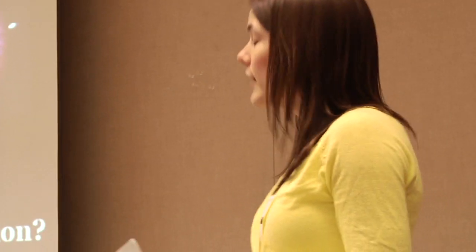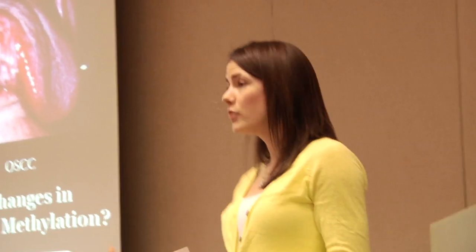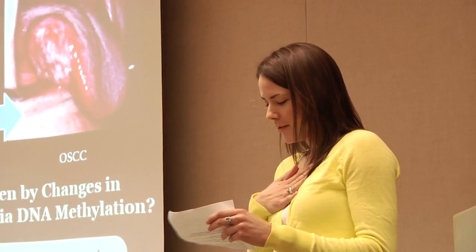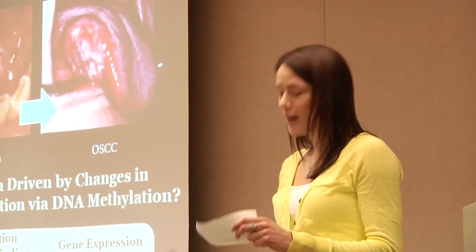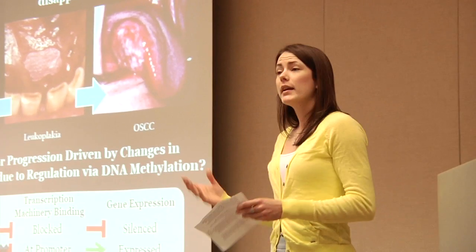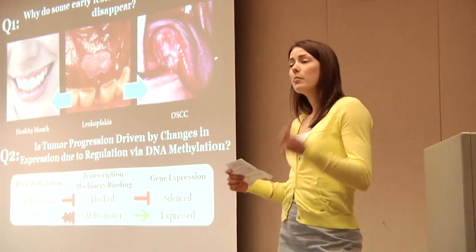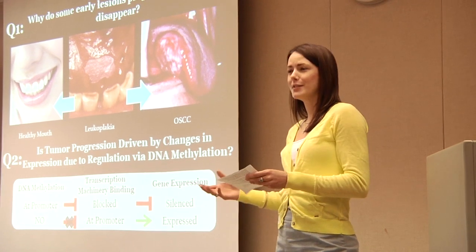Changes in the expression levels of genes can greatly affect the behavior of cells, leading to increased cell proliferation or immune system evasion — two characteristics of cancer cells. DNA methylation is the addition of methyl groups to cytosine residues in specific regions throughout the genome. Gene expression can be regulated by DNA methylation by controlling access of transcription machinery to the promoter regions of these genes. DNA methylation at the promoter region prevents the binding of transcription factors and DNA polymerase, effectively reducing the expression of this gene. Conversely, a lack of DNA methylation allows for transcription machinery binding and results in gene expression. As this regulatory mechanism is reversible, DNA methylation has been shown to play an important role in the timing of many developmental processes, with aberrant DNA methylation linked to many diseases including cancer.